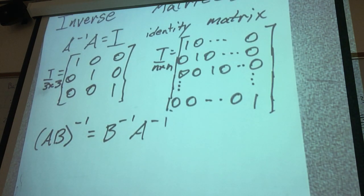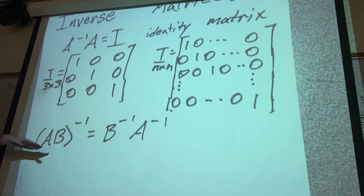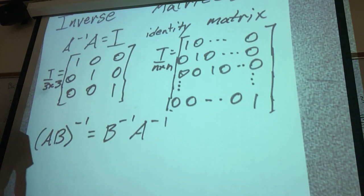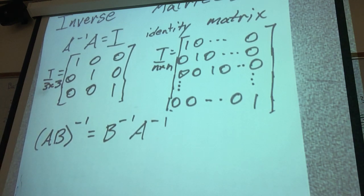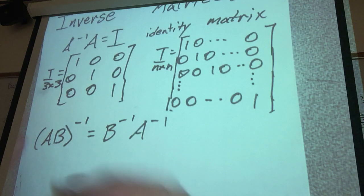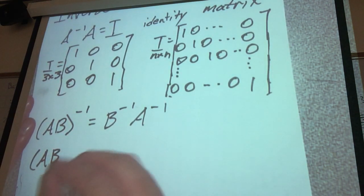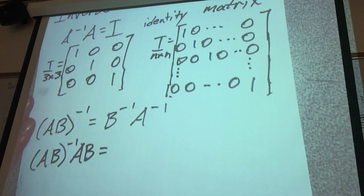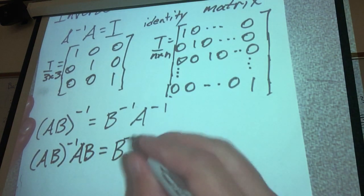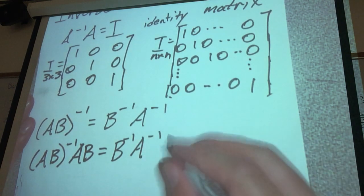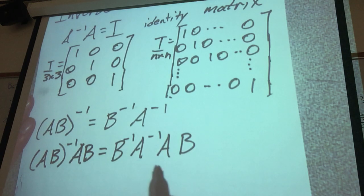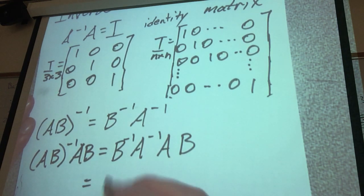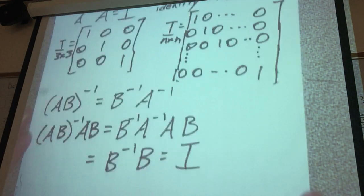Now why would we want this property to happen? If you had two matrices being multiplied by each other and you said you want their inverse, we want it to be B inverse, A inverse. The reason is that we want (AB) inverse times AB to actually equal the identity matrix. So this would be B inverse, A inverse, AB — then A inverse and A cancel each other off, leaving B inverse times B, which equals the identity matrix.